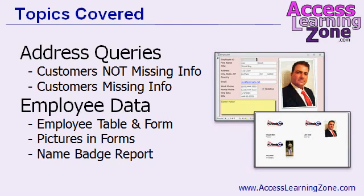Then we'll make a second query to show any customers who are missing any bit of address information. So if someone's missing a zip code, for example, I can print out a list to hand to the secretary and say, please call this customer and get their zip code.